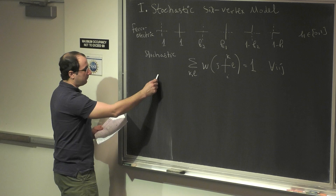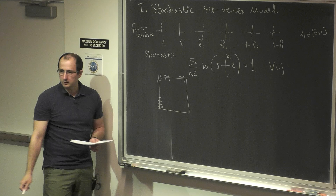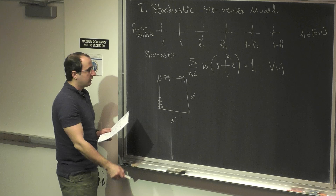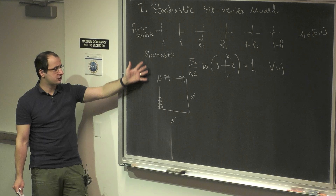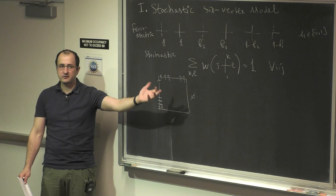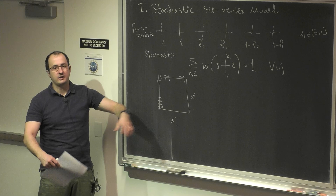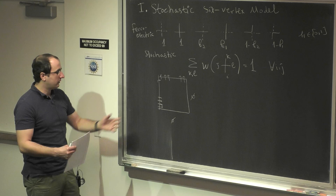The boundary conditions one wants to understand — and which are poorly understood — are the domain wall boundary conditions, when you have arrows incoming and outgoing on one side and empty on the other side, with uniform or stochastic or general weights. You can show by looking at the variance that having boundary conditions means you can re-normalize the weights, so there are only two parameters left.